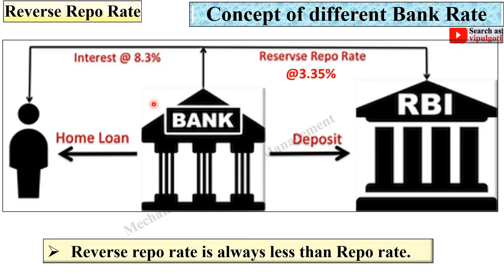From this figure, you can understand the concept of reverse repo rate. The bank can give money to a borrower at 8.3% interest in the form of a home loan. Apart from this, if the bank has surplus funds, it can deposit those surplus funds with the RBI, and in return RBI pays the bank an interest of 3.35% — that is called the reverse repo rate. So reverse repo rate is always less than repo rate.